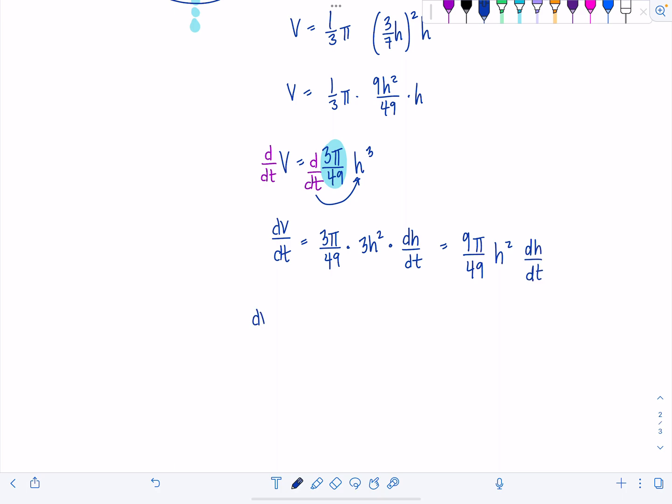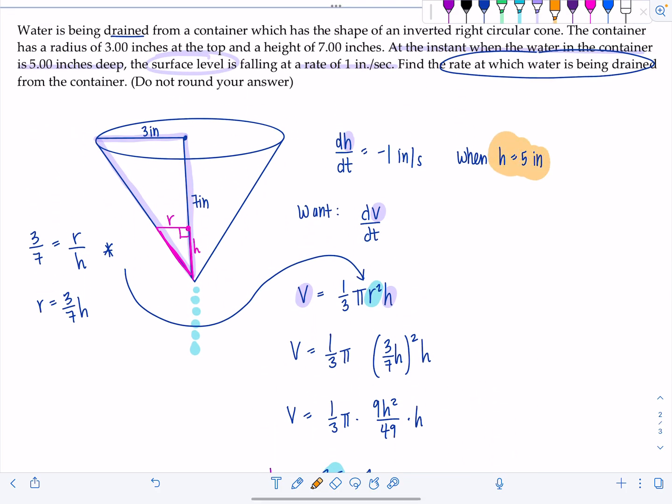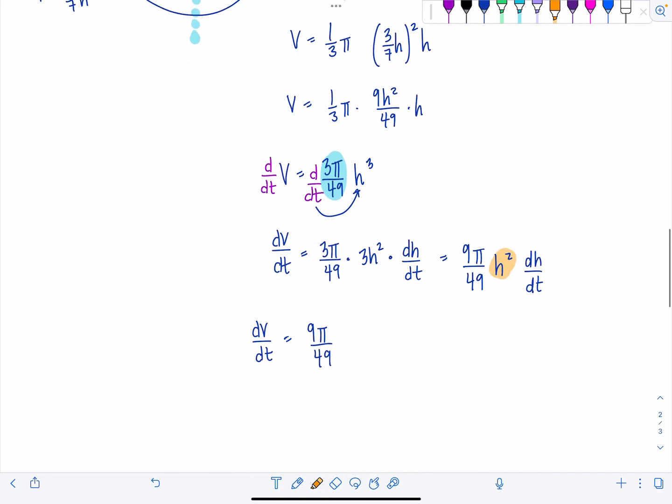So what does this give me? This is going to be 9π over 49 h² dh/dt. Okay, well the worst is over. So that means dV/dt is 9π over 49. What do I plug in for h? Now is when I use the h is 5 inches. So this is going to be times 5² times dh/dt. I know is negative 1. They said the level was falling. So this is going to be 25 times 9, negative 225π over 49 inches cubed per second. That's the rate of change of volume.